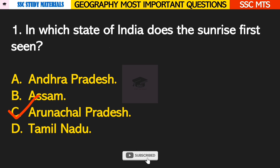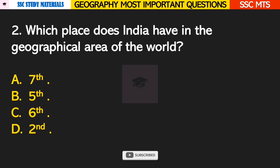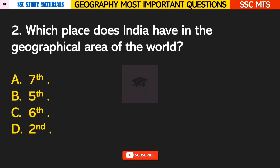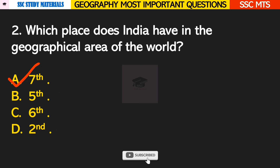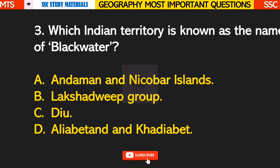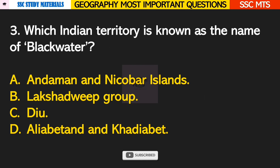Answer C — it is first seen in Arunachal Pradesh. Question number 2: which place does India have in the geographical area of the world? Answer A — seventh place.